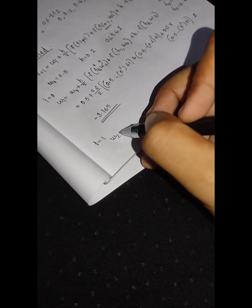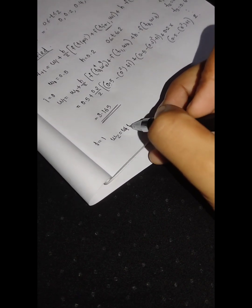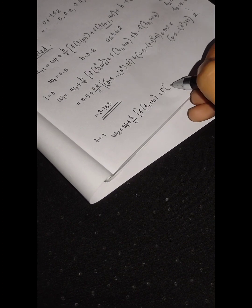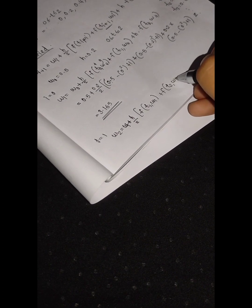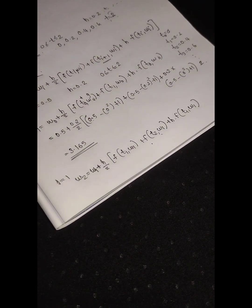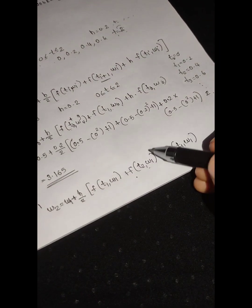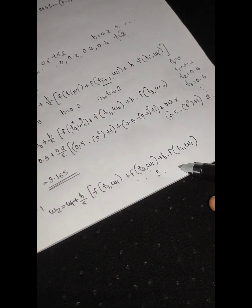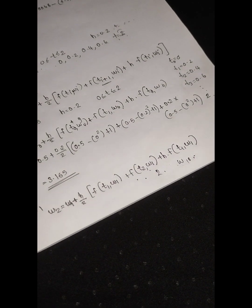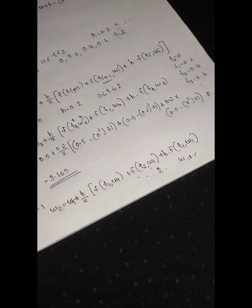For w2: w1 plus h/2 times [f(t1, w1) plus f(t2, w1 plus h times f(t1, w1))]. This step follows the same pattern, computing the predictor at t1, w1 and then correcting. This completes both the midpoint method and the modified Euler's method calculations.